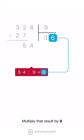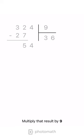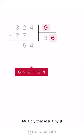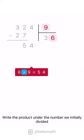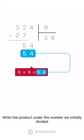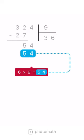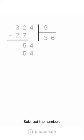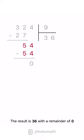Multiply that result by 9. Write the product under the number we initially divided. Subtract the numbers. The result is 36 with a remainder of 0.